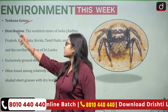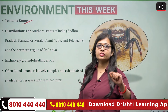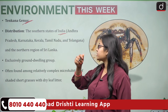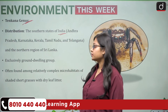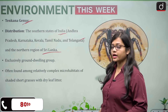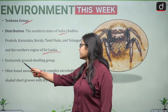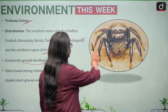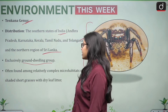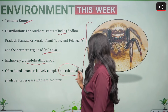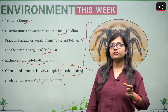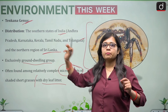Regarding the Tenkana genus distribution, they are found in the southern states of India — Andhra Pradesh, Karnataka, Kerala, Tamil Nadu, and Telangana — and in the northern regions of Sri Lanka. They are an exclusively ground-dwelling group, often found among relatively complex micro-habitats of shaded short grasses with dry leaf litter.